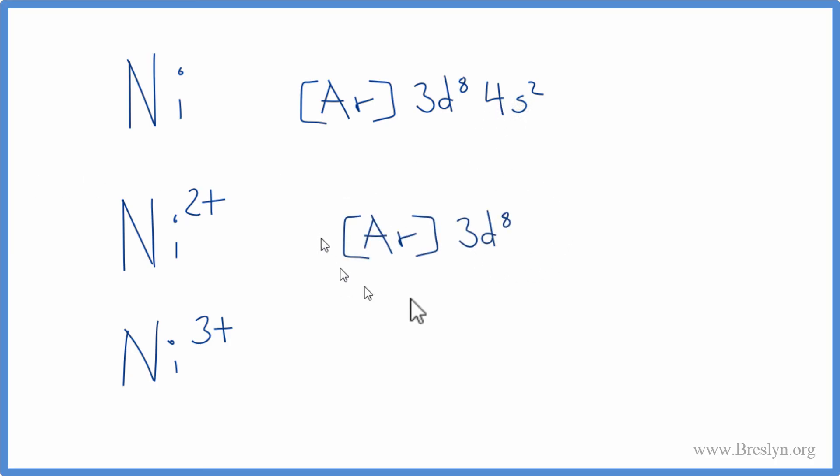That'll give us this notation here where we end in the 3d⁸. For the nickel 3+, we've lost a total of three electrons here, so we get rid of our 4s² and we'll get rid of one of the electrons in this d orbital here. That'll give us 3d⁷. So that's it—these are the electron configurations for nickel and the nickel 2+ and nickel 3+ ions. First you write the neutral element, and then you remove electrons depending on what the charge is.